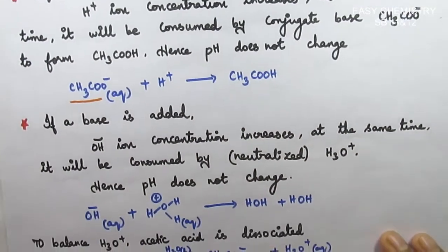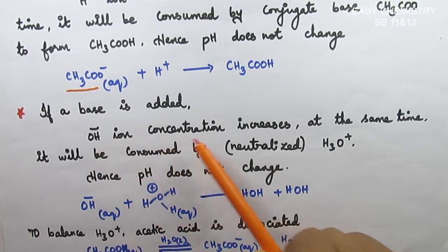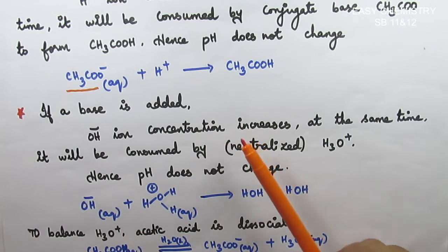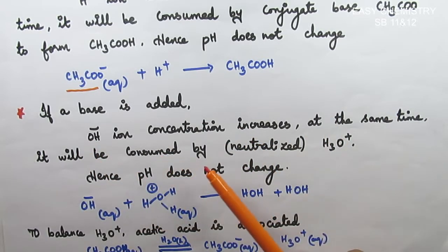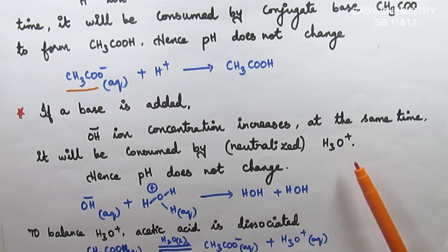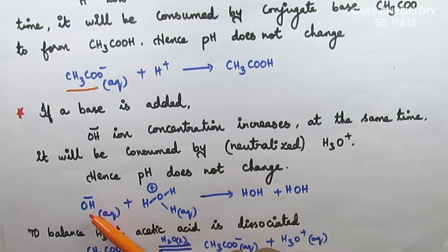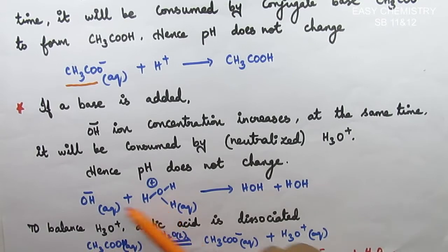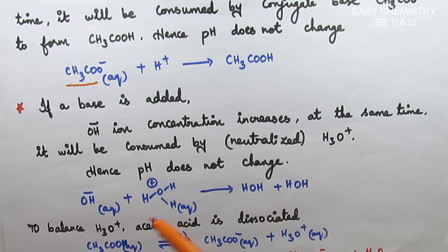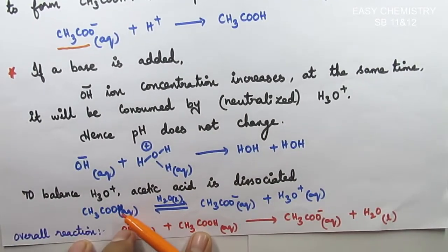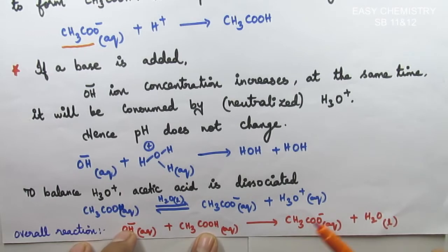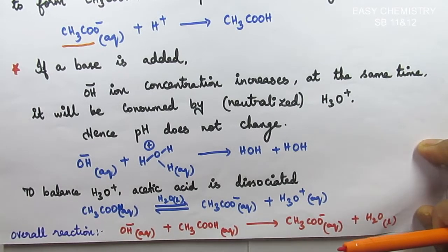When you add a base, meaning OH minus ions, their concentration increases. The OH minus ions are consumed by the H3O plus (hydronium ions) present in the buffer solution. H3O plus reacts with OH minus to form water, so the OH minus is neutralized. When H3O plus concentration decreases, acetic acid ionizes further to replenish it, maintaining pH constant.